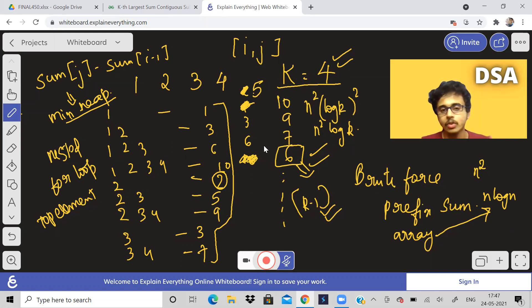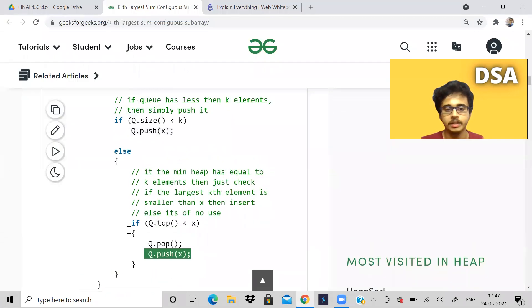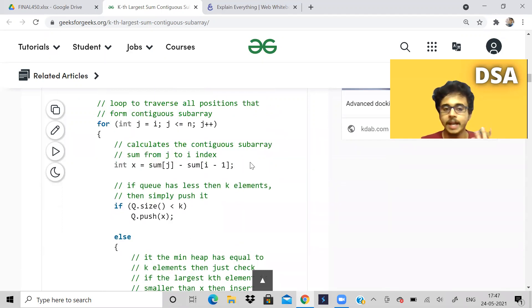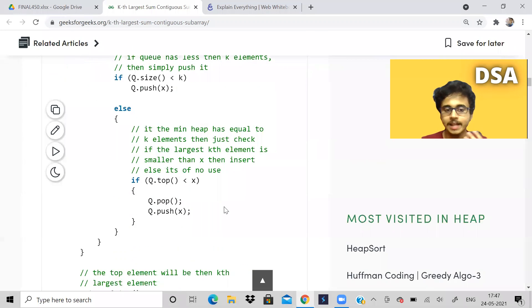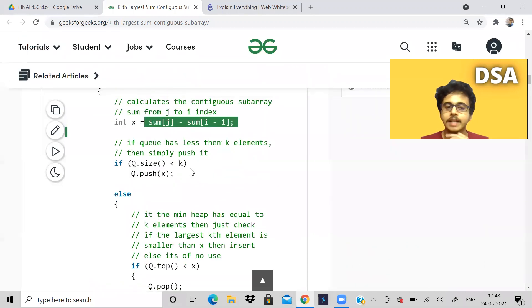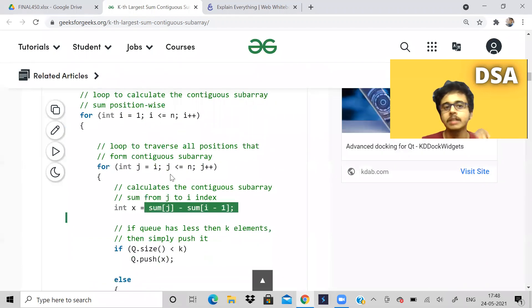The only way you can access any element is the top element. You have to make sure the top element becomes the kth largest element. So that is what they are doing here in this code. If q.top is less than the subarray sum, if it is less, then they are popping that and pushing that sum. If q.size is less than k, they are pushing each and every sum.